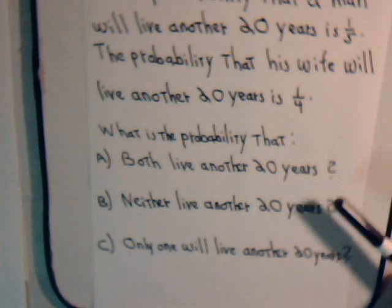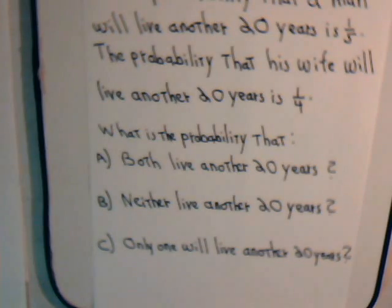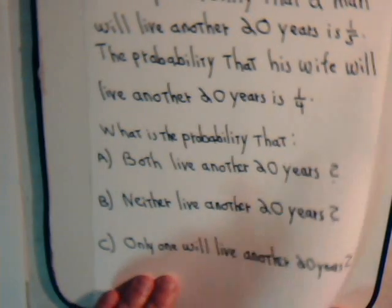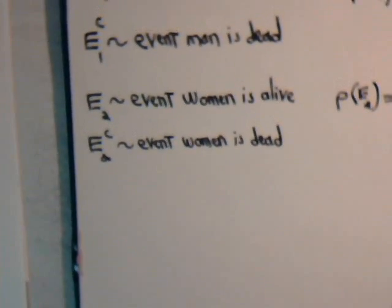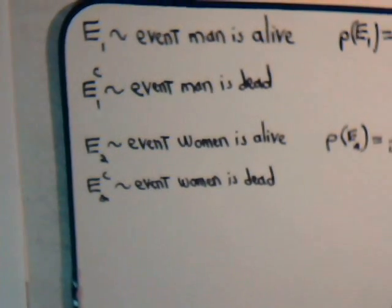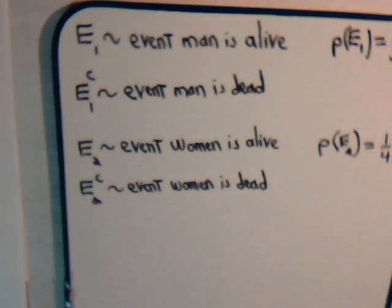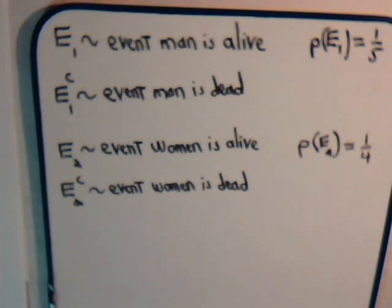Solving parts A and B is pretty straightforward, and so is part C, but part C is going to make us think a little bit. We can say event E1 is the event that the man will be alive, and the probability of that happening is one-fifth.